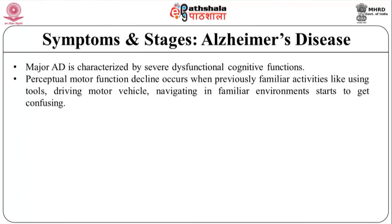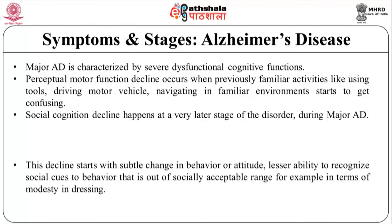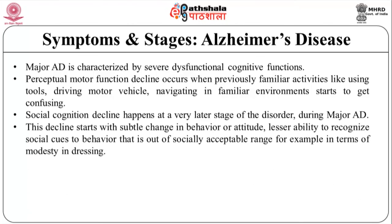Perceptual motor function decline is when previously familiar activities like using tools, driving a motor vehicle, or navigating in a familiar environment starts to get confusing. Social cognition decline happens at a very later stage of the disorder during major Alzheimer's disease. This decline starts with subtle change in behavior or attitude, lesser ability to recognize social cues, to behavior that is out of socially acceptable range.